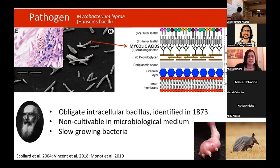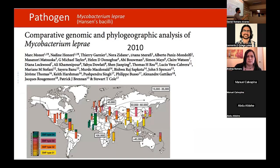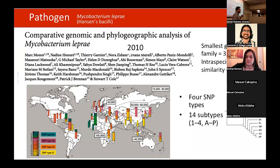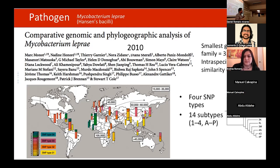Because you cannot culture Mycobacterium leprae, we started understanding important features when its genome was published. A landmark 2010 study collected around 200 strains across the world and found three key things: Mycobacterium leprae has the smallest genome in the family at 3.27 million base pairs; these 200 strains share 99.995% similarity across the entire world; and we have leveraged the remaining 0.005% variation to subclassify the bacteria into four types and 14 subtypes.